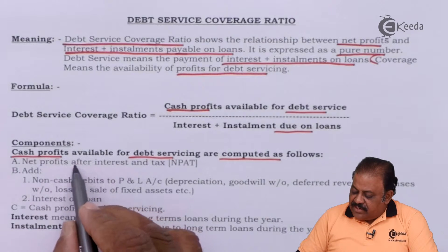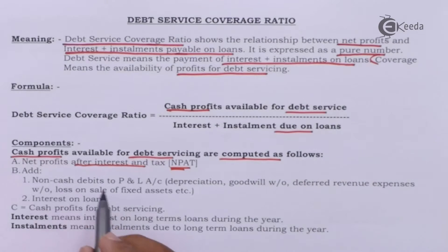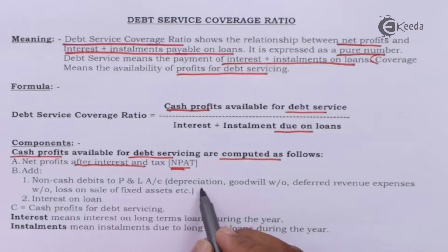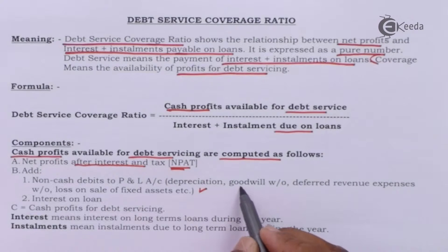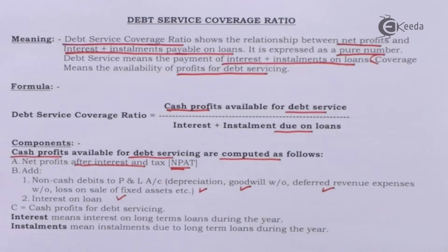Cash profit available for debt servicing is computed as follows: we take net profit after interest and tax, then add non-cash debits to the profit and loss account, such as depreciation, goodwill written off, deferred revenue expenses written off, loss on sale of fixed assets, etc. We are focusing on cash required to pay EMI, so we start with profit from the P&L account and add back non-cash expenses.